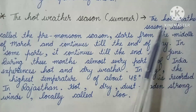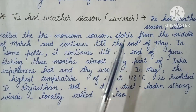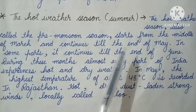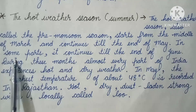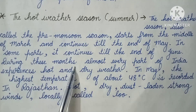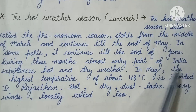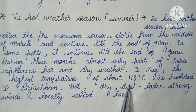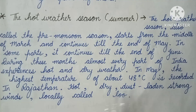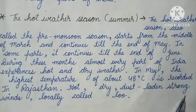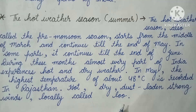The second season is the hot weather season — Summer, also called the pre-monsoon season. It starts from the middle of March and continues till the end of May, and in some parts till the end of June. During these months, almost every part of India experiences hot and dry weather. In May, the highest temperature of about 48 degrees Celsius is recorded in Rajasthan. Hot, dry, dust-laden, strong winds locally called Loo blow during this season.